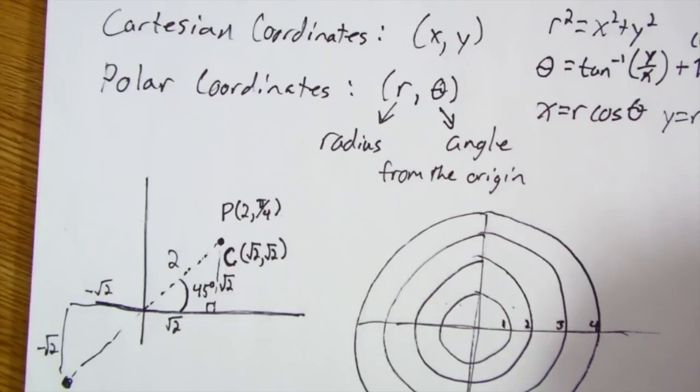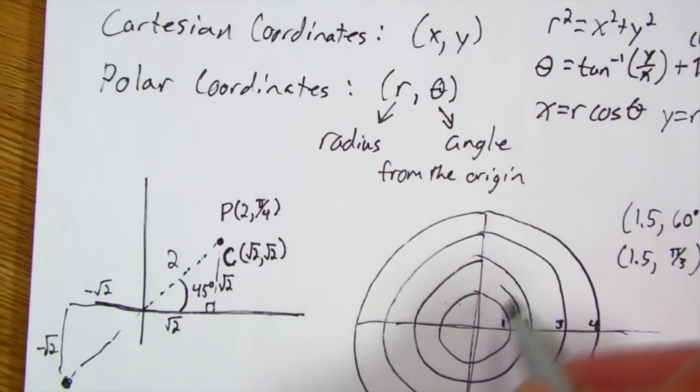If I had a polar coordinate that was like 1.5 comma, and then let's just say 60 degrees, which is also the same thing as saying 1.5 comma π over 3, that point would be 1.5 units out, so in this region, and I would stay in a circle, and then it would be at a 60 degree angle, so it would be that point right there.